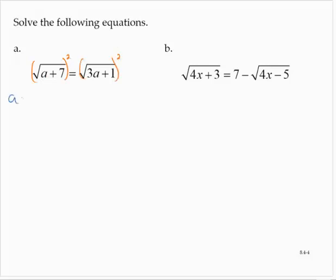So that would give us a plus 7 is equal to 3a plus 1. And that's a linear equation. Subtracting 3a from both sides is negative 2a. Subtracting 7 from both sides is negative 6. a is equal to 3.